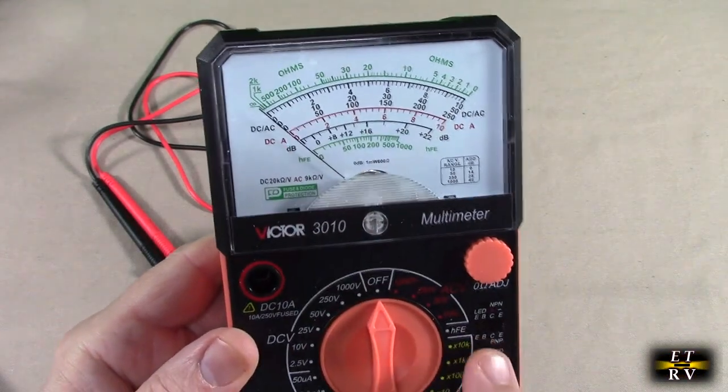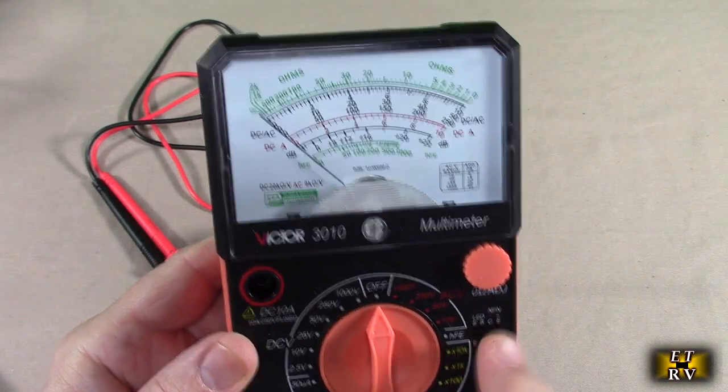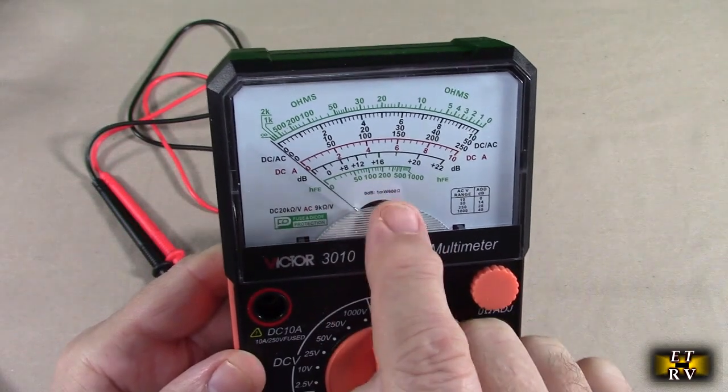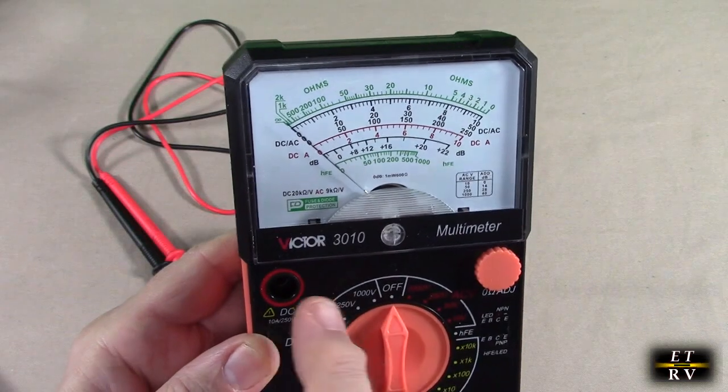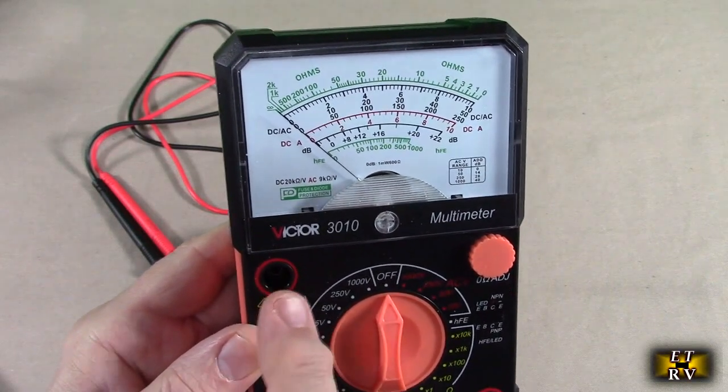What they're going to do, they're going to forward bias the NPN or PNP and they're going to let you see the HFE of that transistor on there. You also have DC amps. You can see the red right there where you're going to be putting in the DC amps right there.